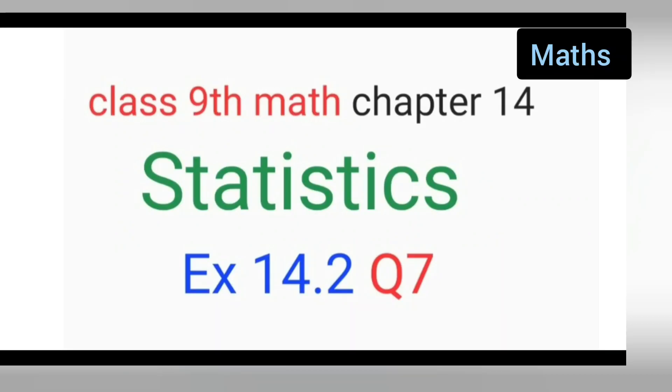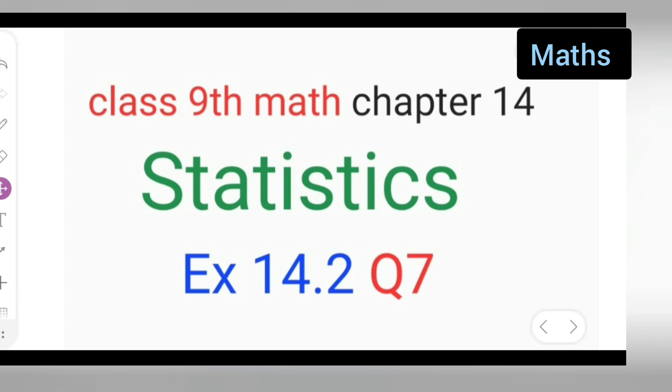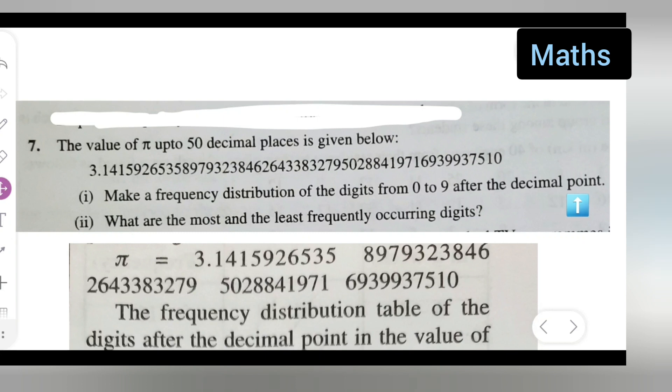Welcome to today's class of mathematics. This is for Class 9 mathematics, Chapter 14 Statistics, Exercise 14.2, Question Number 7. The value of pi up to 50 decimal places is given: 3.14... Make a frequency distribution of the digits occurring from 0 to 9 after the decimal point.